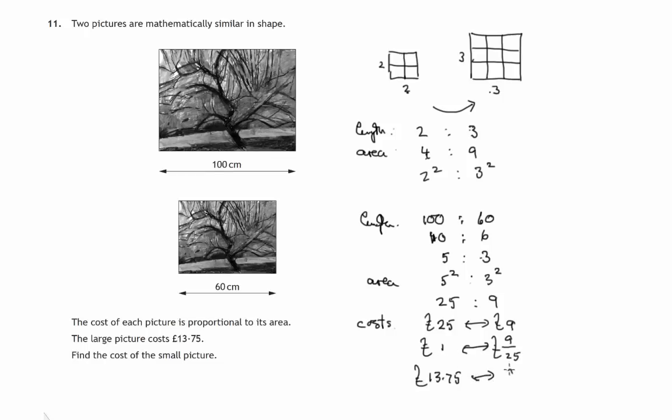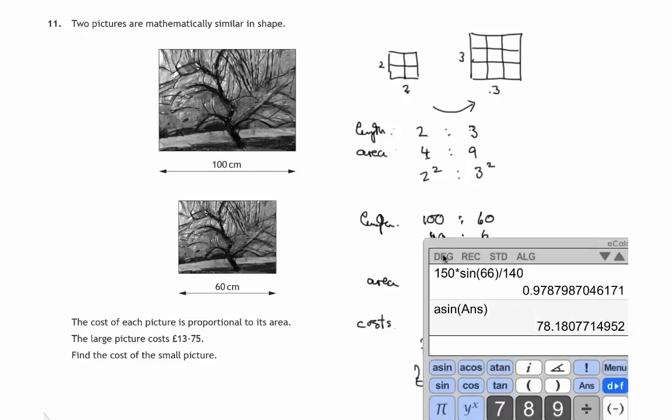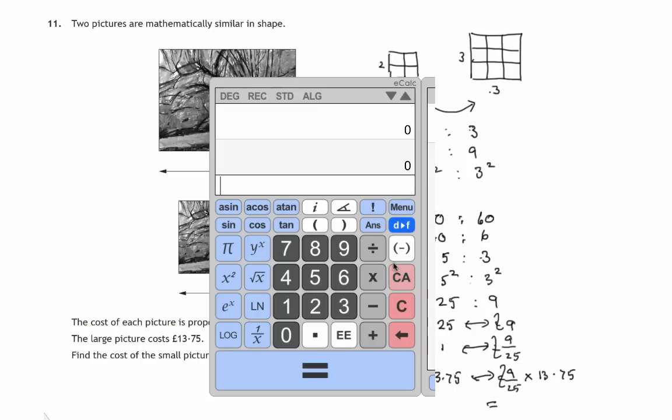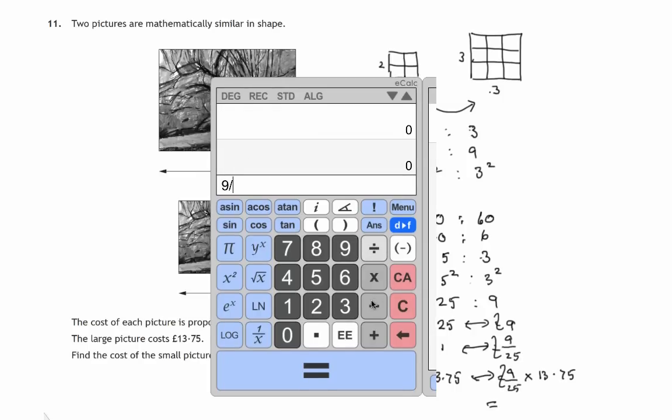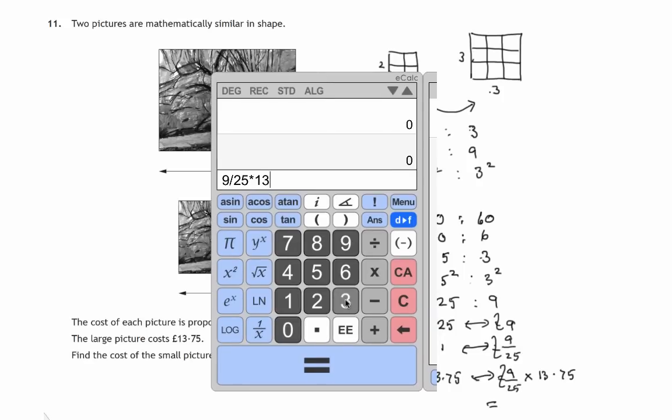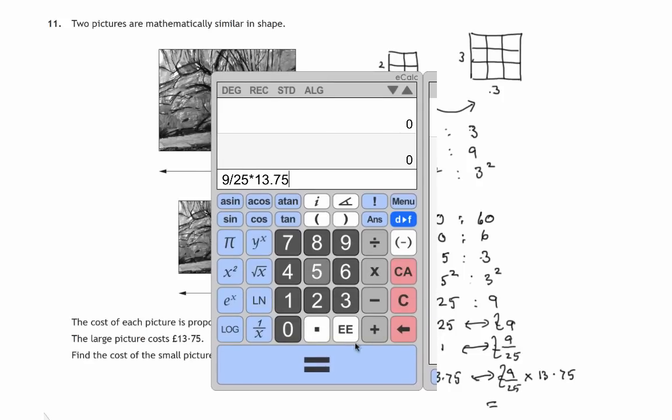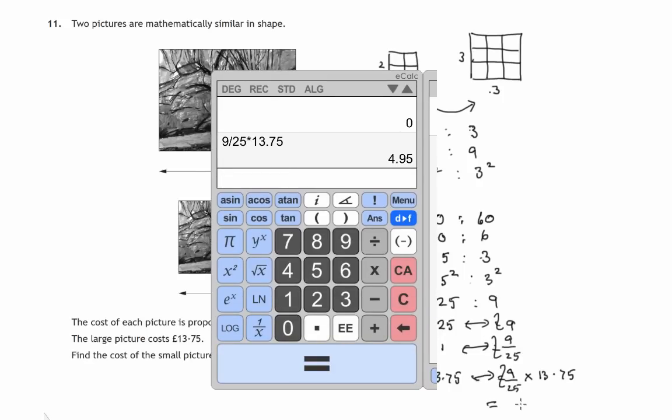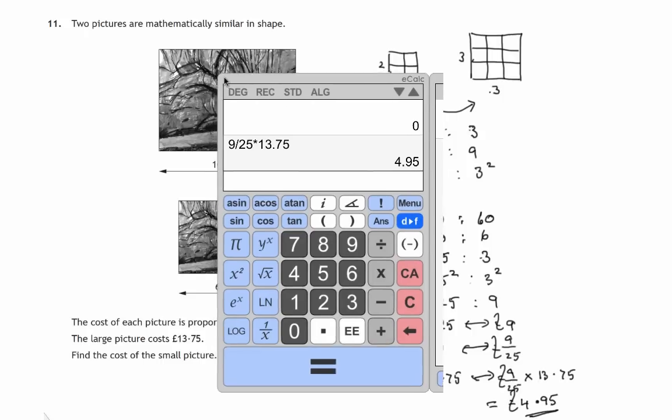We'll get 9 over 25 times 13.75. Let's try it in a calculator. So 9 divided by 25 times 13.75 gives us £4.95. So the smaller picture would have to cost £4.95.